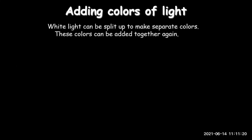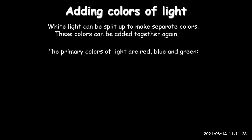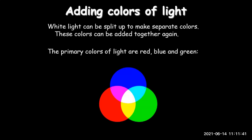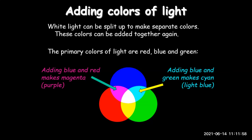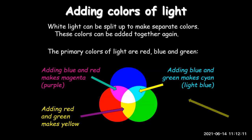White light can be split into separate colors, and these colors can be added back together. The primary colors of light are red, blue, and green. Mixing blue and red gives magenta. Mixing blue and green gives cyan. Mixing red and green gives yellow. Adding all three primary colors together gives white light.